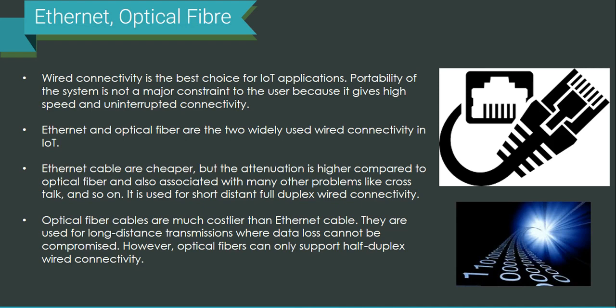Ethernet cables are inexpensive, but attenuation is higher compared to optical fiber, and they are also associated with other problems such as crosstalk. Ethernet is used for short-distance, full-duplex wired communication. On the other hand, optical fiber cables are much more expensive than Ethernet cables. They can be used for long-distance transmission where data loss is not tolerated. However, optical fibers can only support half-duplex wired connectivity, which is a notable disadvantage.